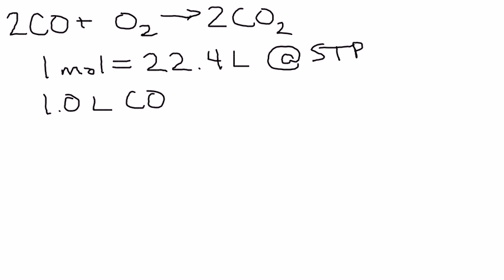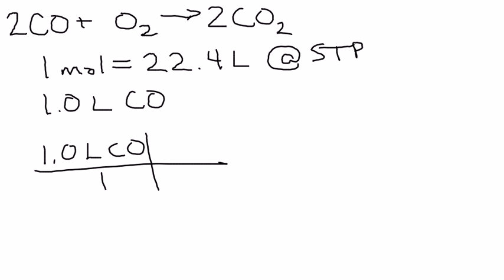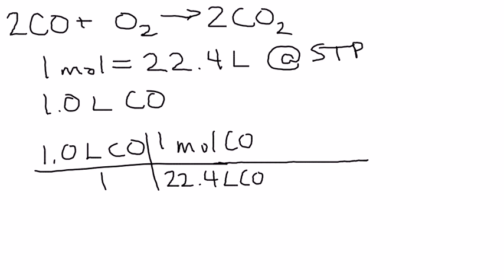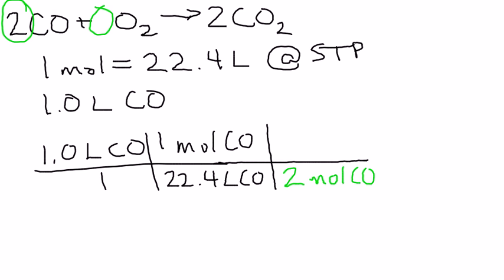This is going to be a little bit of stoichiometry. We're going to start by taking what we know and putting it over 1 — 1.0 liters of carbon monoxide over 1. Our first conversion factor is to get to moles. We always want to get to moles before we do any sort of a mole ratio. So I'm going to put 1 mole of carbon monoxide divided by 22.4 liters of that carbon monoxide. My mole ratio — we have 1 mole of oxygen for every 2 moles of carbon monoxide, so I'll put 2 moles of carbon monoxide and 1 mole of oxygen.